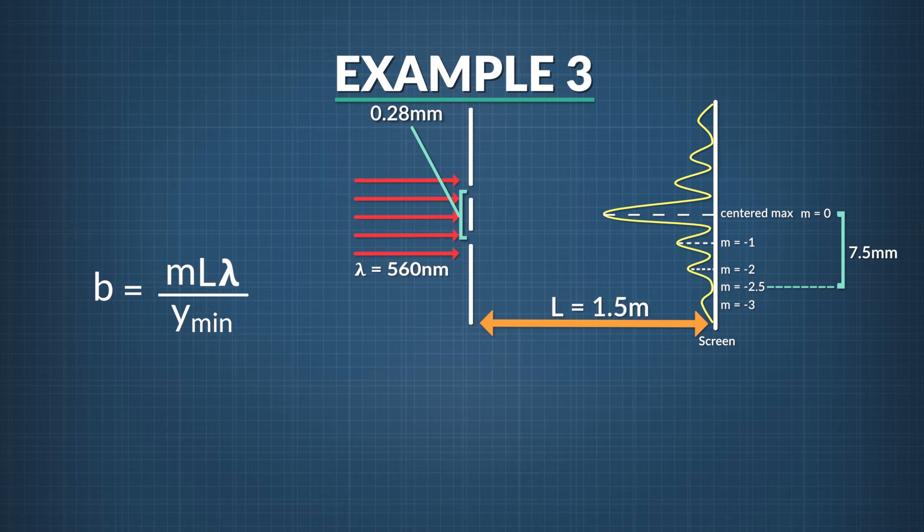We are looking for the third dark spot below the center. The equation we have been using for double slits has m as a positive or negative integer, plus or minus 1, plus or minus 2, and so forth. This is true for when we are looking for the distance to a bright spot. But what if we have or are looking for the distance to a dark spot, to a minimum? In this case, the third dark spot, or third minimum below the central maximum, lies at a position where m is equal to minus 2 and a half.